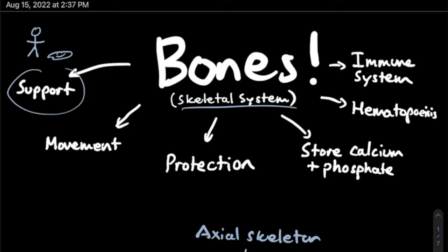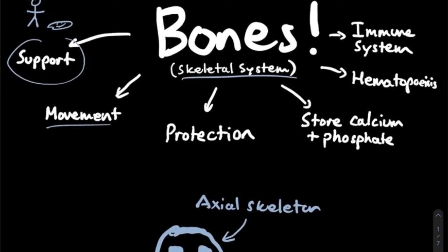Next is movement. In order to be able to move different parts of our body — for example, our arms and our legs — we have muscles pulling different bones closer together. That contraction is what ultimately allows for coordinated movement. So movement is the second main function of bone.